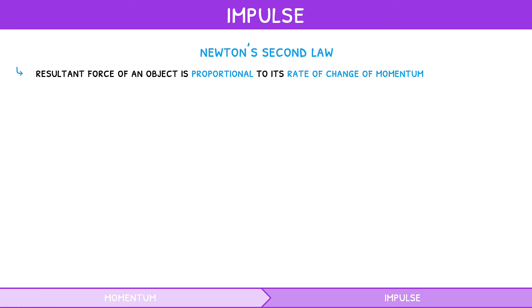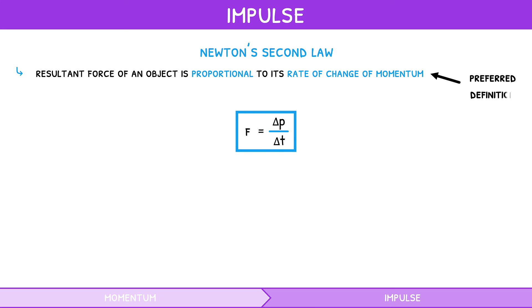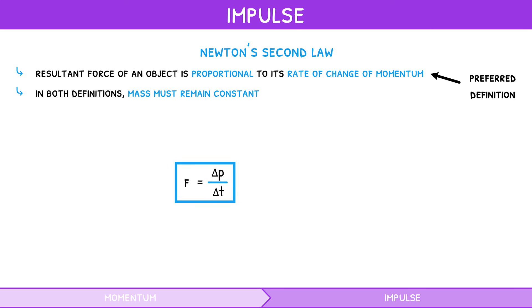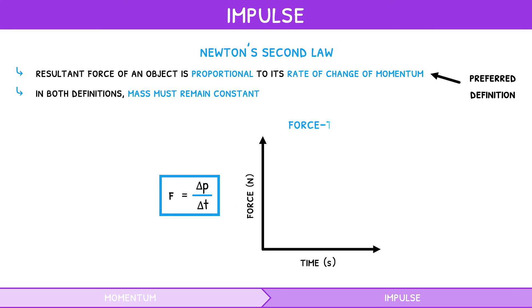The formula for this is force equals impulse divided by change in time. This is in fact the preferred definition of Newton's second law, since it is applicable in more complex situations. Note that in both definitions, mass must remain constant for the law to apply. The IB then expects you to use this relationship to analyse force-time graphs of collisions, which often appear as triangular lines where the area under the line at any point equals the impulse up to that point.